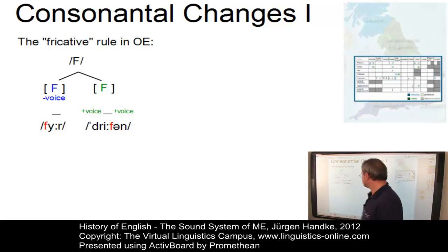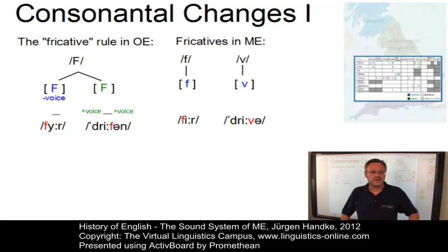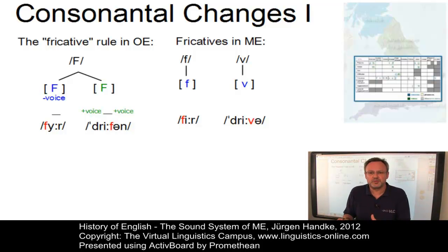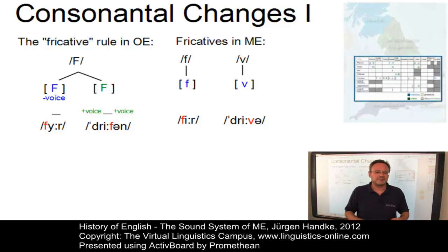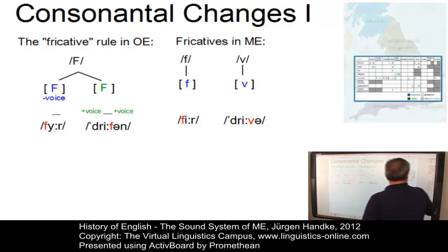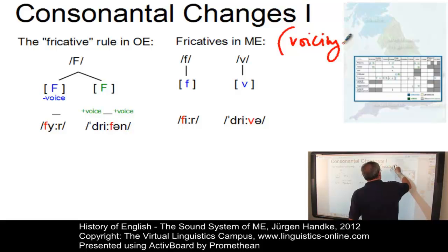This changed in Middle English. All former fricative allophones became new phonemes — for example, the labiodental voiced fricative /v/, the dental voiced fricative /ð/, and the alveolar voiced fricative /z/. This phenomenon has become known as the voicing of fricatives.